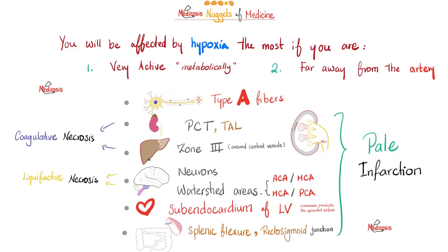The tissues most vulnerable to hypoxia include Type A fibers because they are very active metabolically. In the kidney, the proximal convoluted tubule — the most active part — and the thick ascending limb of the loop of Henle, the second most active part. The proximal tubule reabsorbs 65% of almost everything, and the thick ascending limb reabsorbs about 20% of almost everything except water, as it is impermeable to water. The loop of Henle is responsible for concentrating or diluting urine via the countercurrent multiplier system.